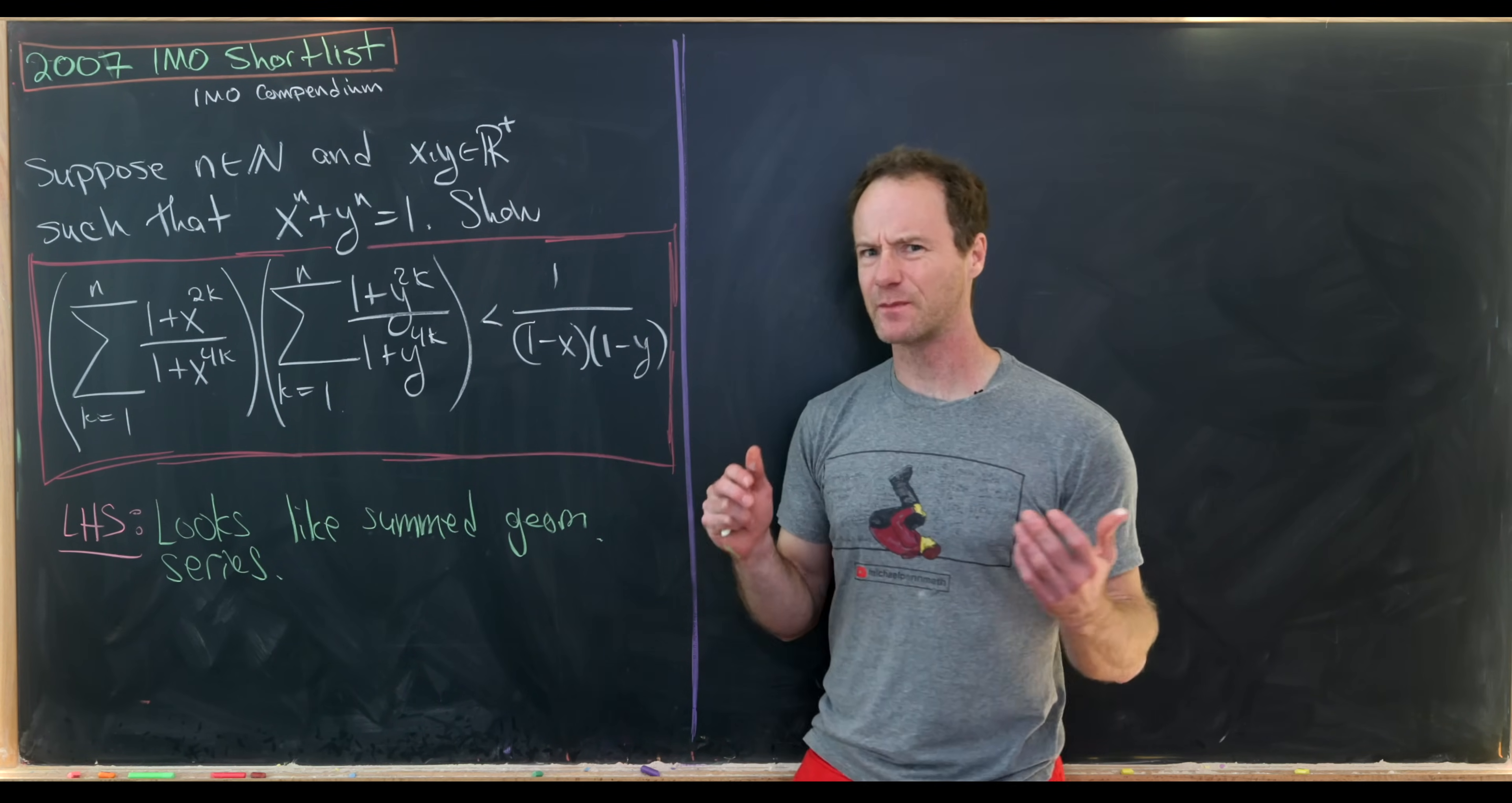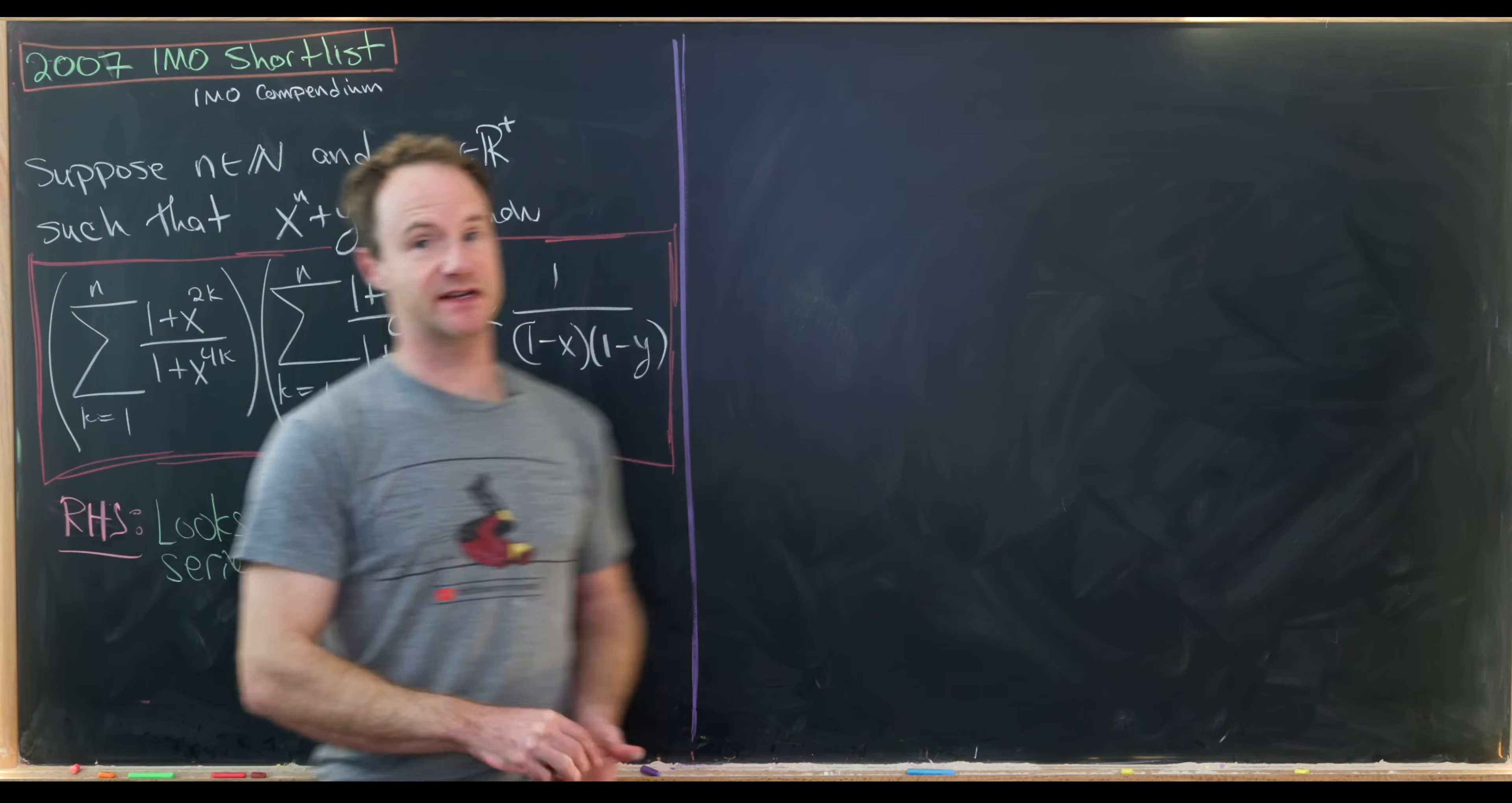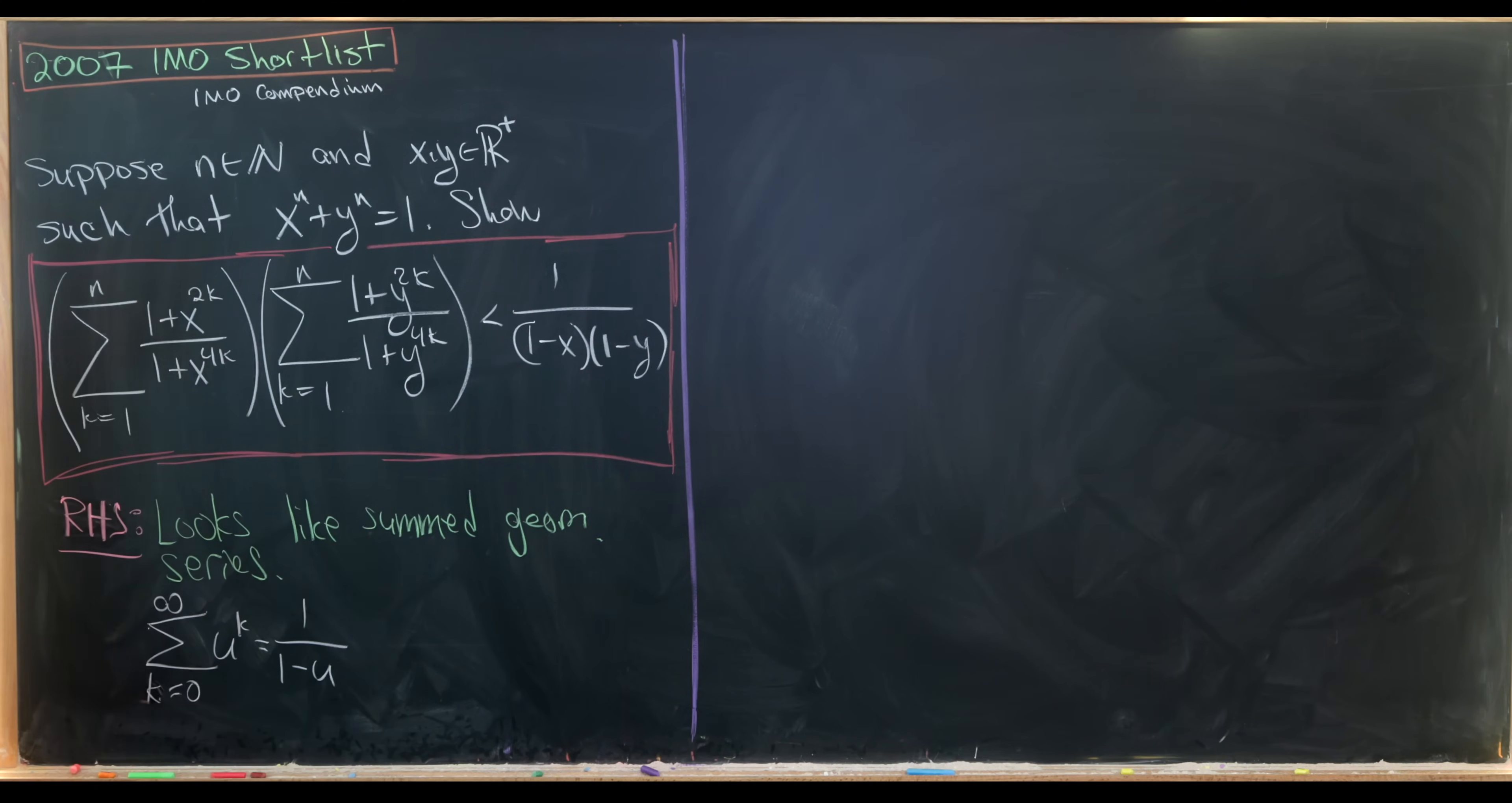And I think there's a pretty big hint built into the writing of this problem, and that is that the right-hand side of our inequality looks like a summed geometric series. So let's maybe recall real quick that if we take the sum as k goes from 0 to infinity of u to the k, we get 1 over 1 minus u.